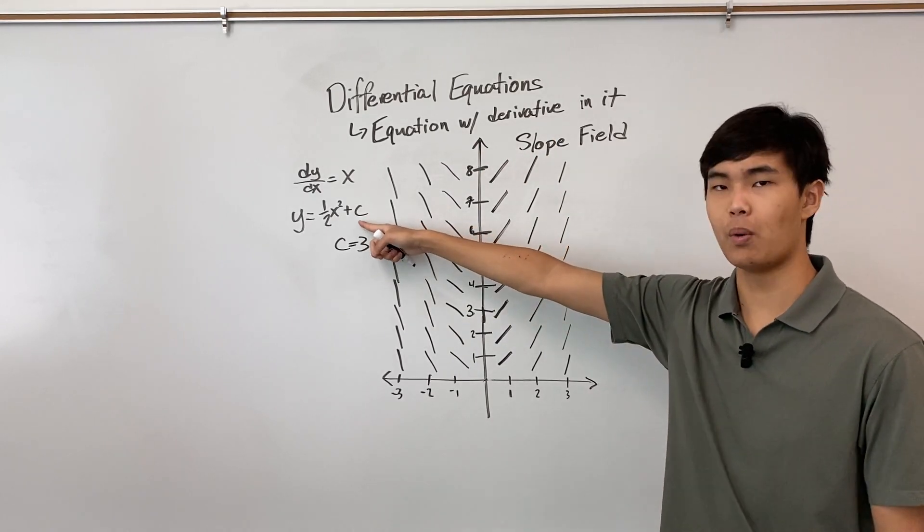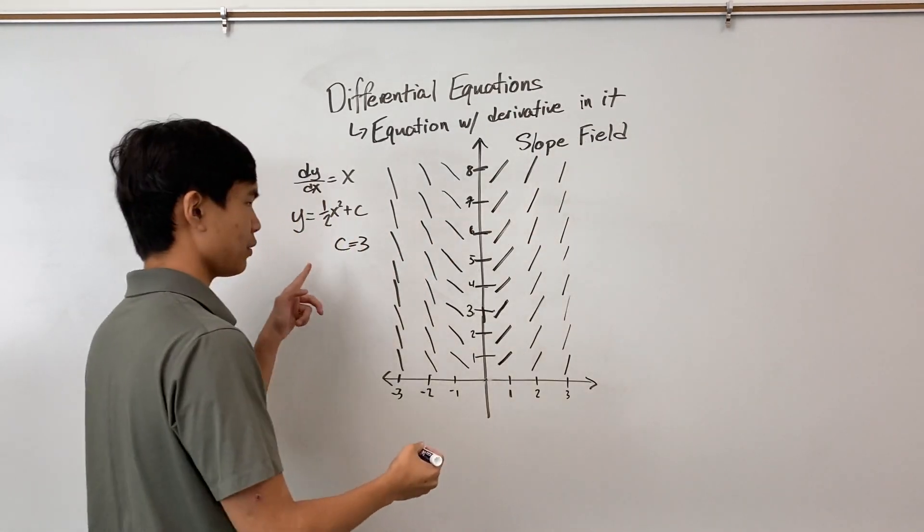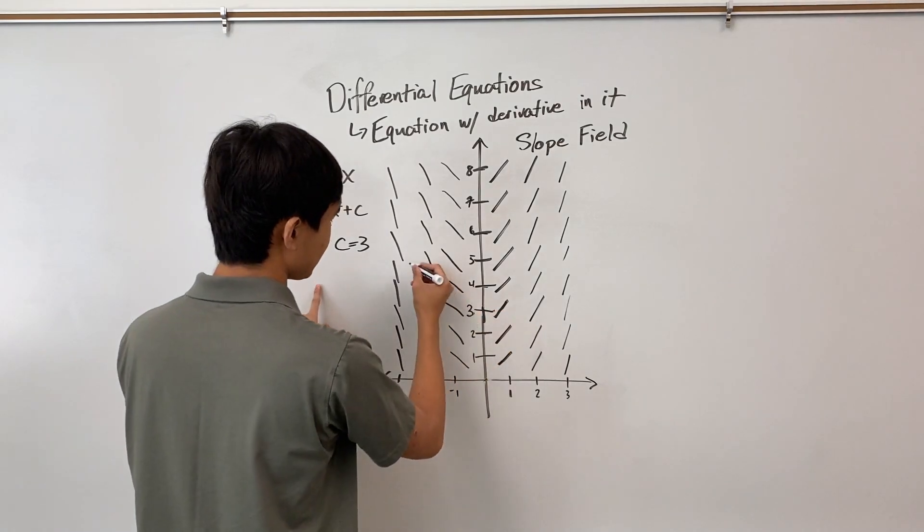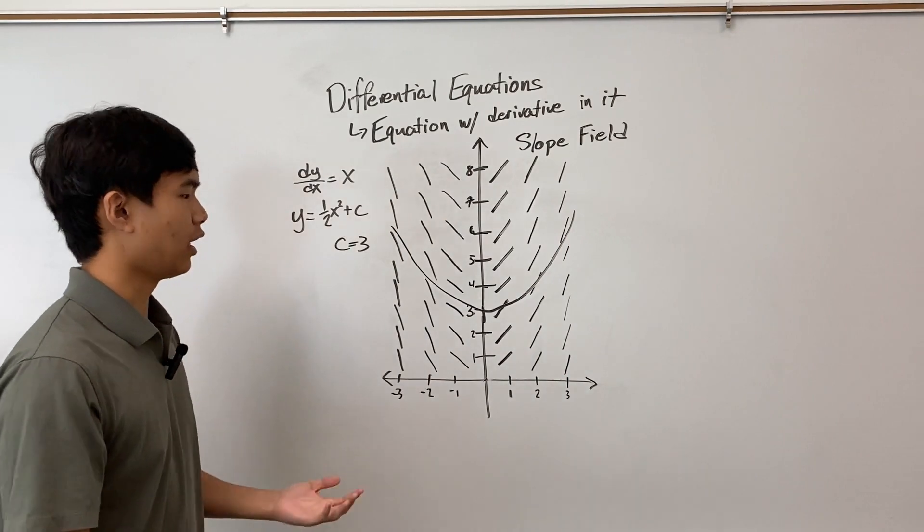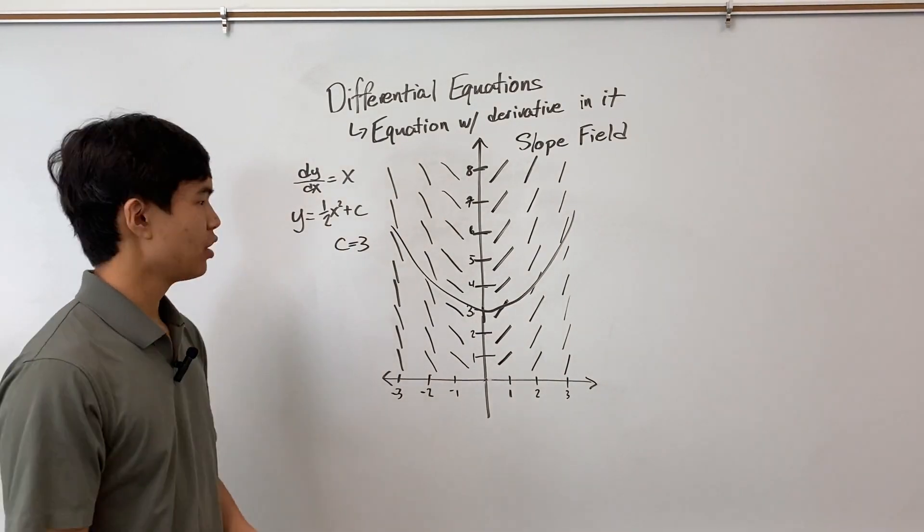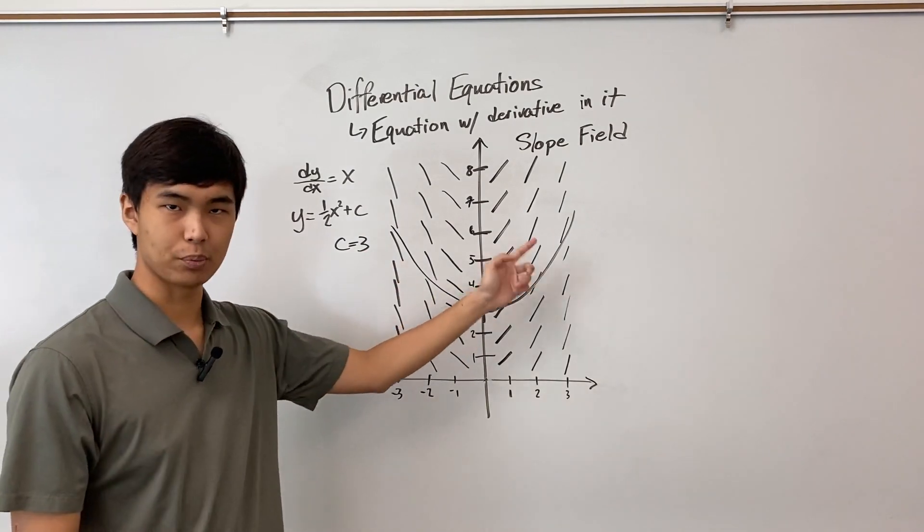And so when we take c = 3, and we plot this, we get something like that. Now, obviously, I'm not the best artist in the world. But you can see that our y curve follows the slope field pretty well.